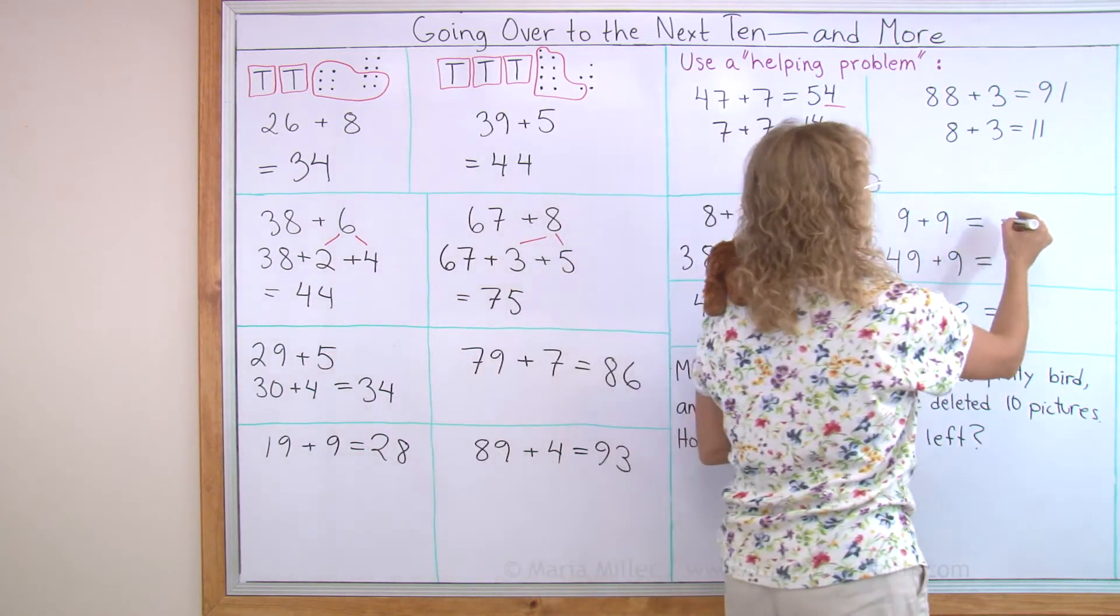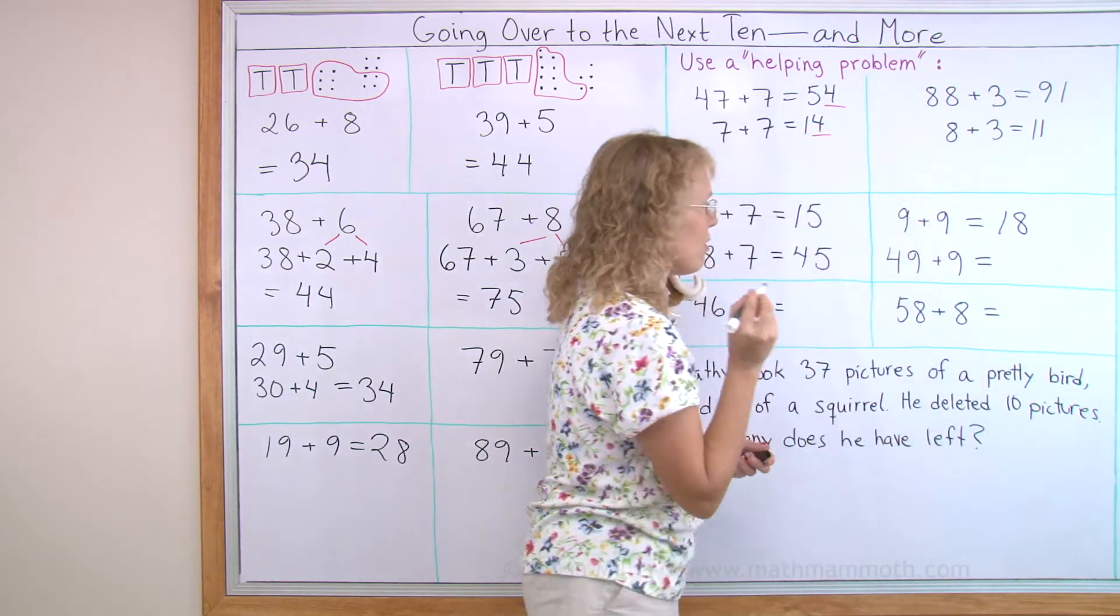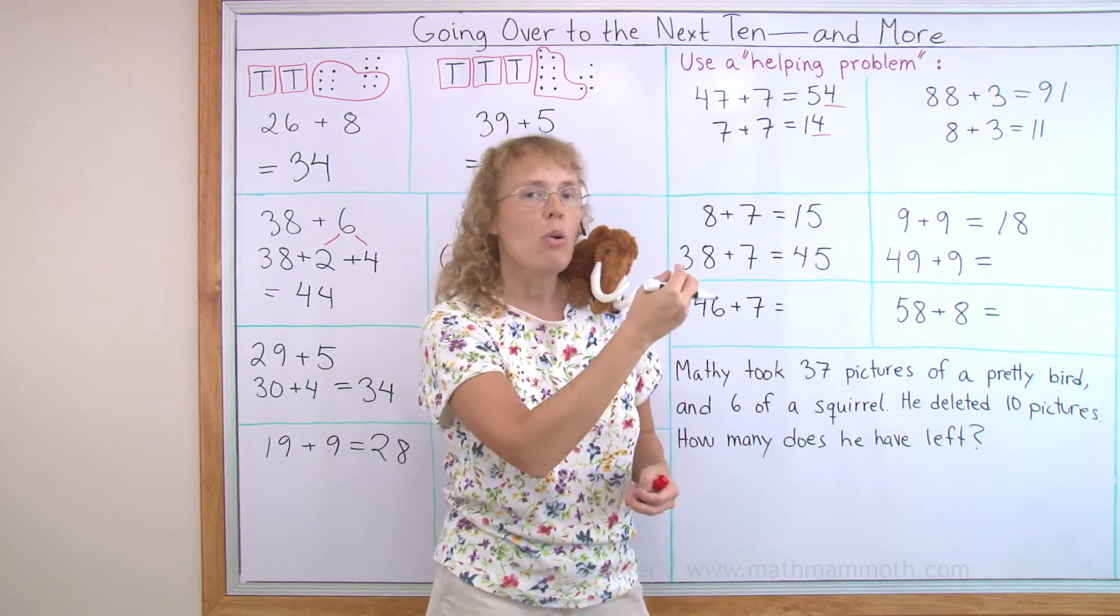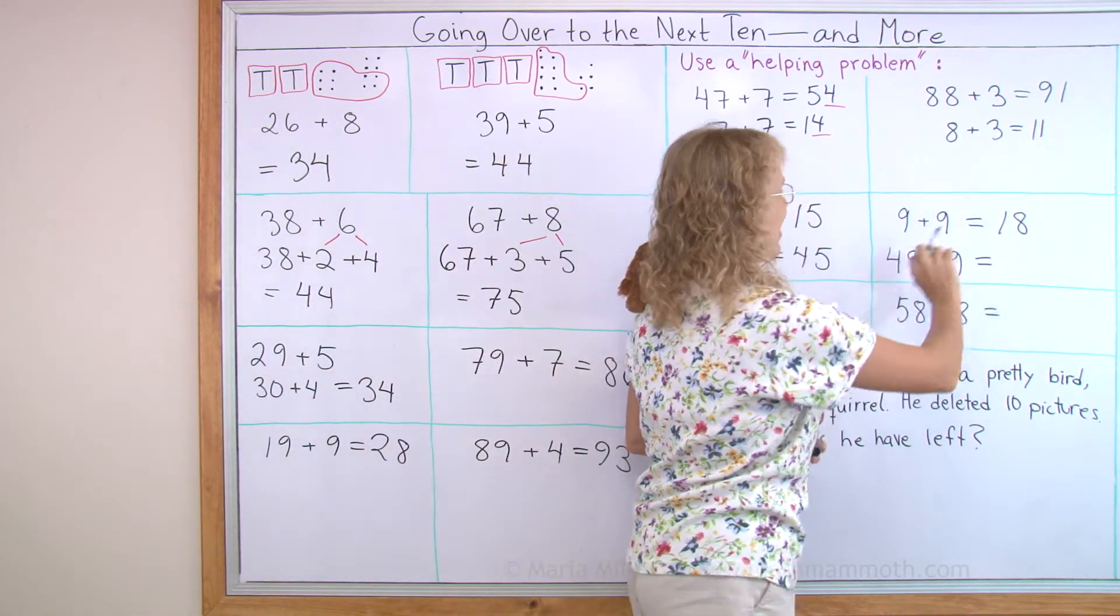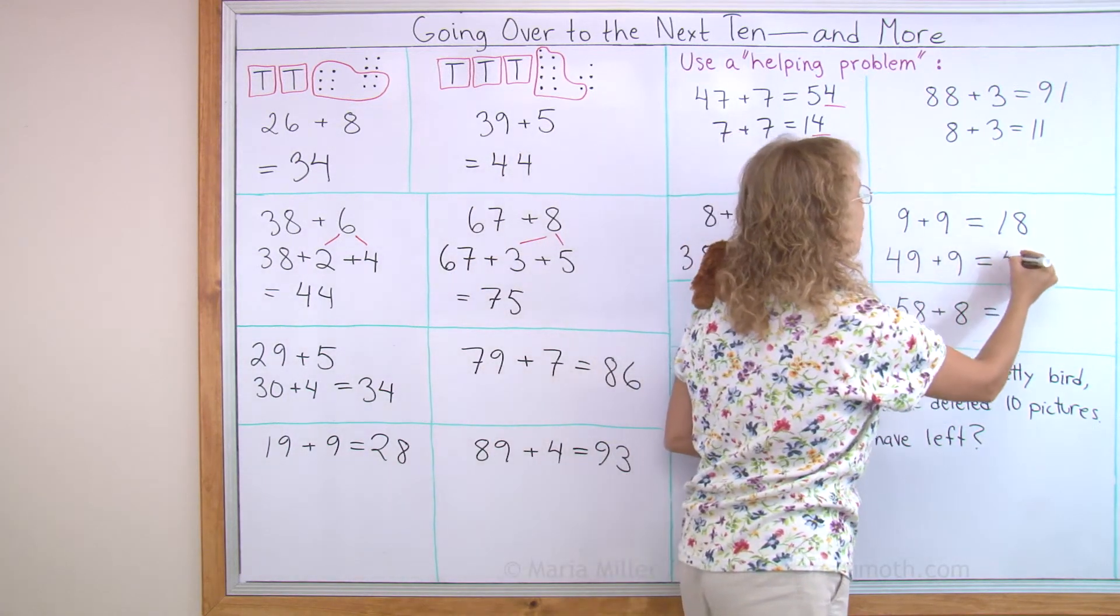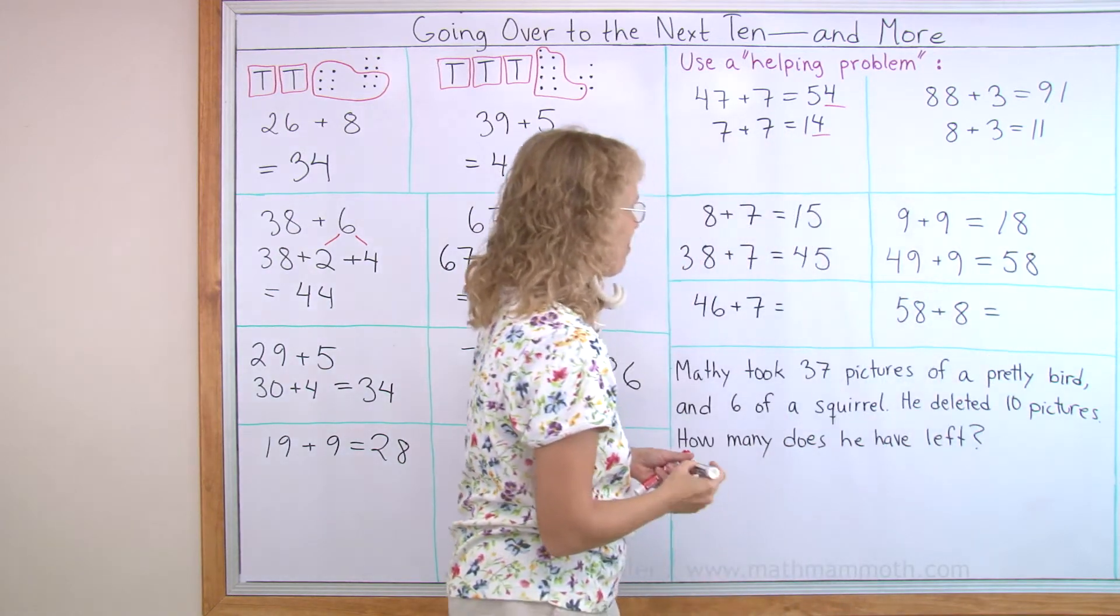9 plus 9 is 18. 49 plus 9 will go over the next 10 by 8, like that one. So it will be 58.